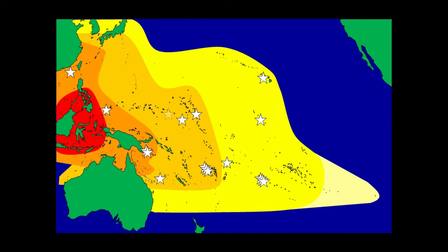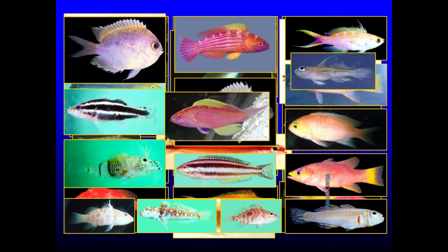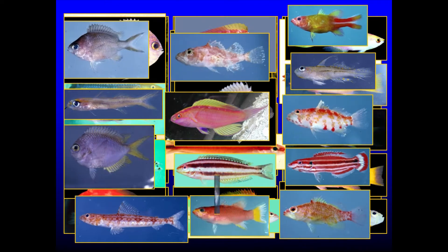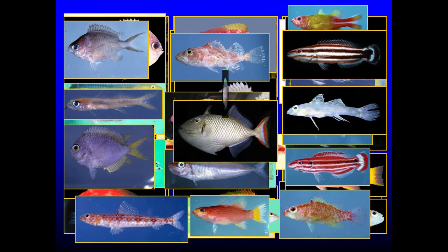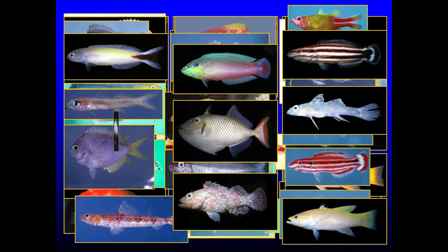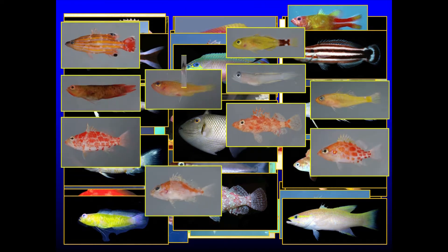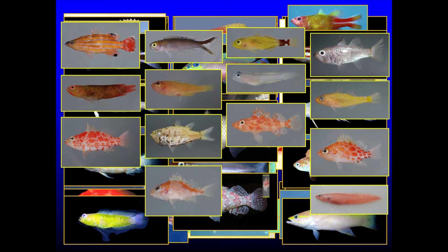In the 20 years since, we've done expeditions to dozens of localities all across the Pacific. We've seen a lot of different deep coral reefs and got a much better handle on the overall pattern across the Pacific. We've found many new species over the course of those expeditions — in fact, our best data suggests we're finding new species at a rate of upwards of 12 new species per hour of exploration time, which is utterly unprecedented, at least in the world of vertebrates.